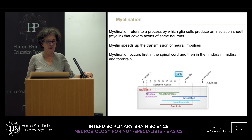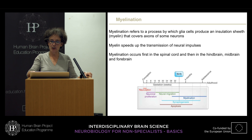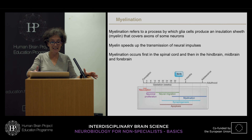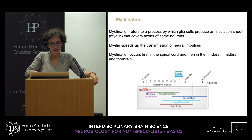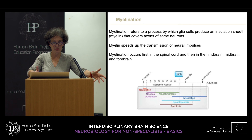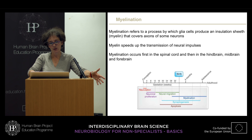What is myelination? It basically refers to a process by which glial cells, very abundantly present in the central but also in the peripheral nervous system, produce an insulation sheath called myelin. Myelin covers the axons of some neurons, in particular very long fiber tracts leaving the brain going down along the spinal cord — for example, motor fiber tracts — which are highly myelinated. Myelin helps to speed up the transmission of neural impulses.